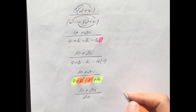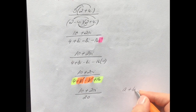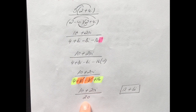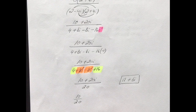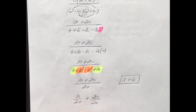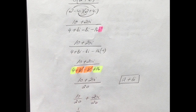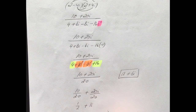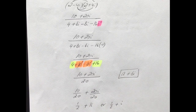Now be careful — you need the answer in the form a plus bi. Divide both terms 10 and 20i by 20: 10 divided by 20 is one half, and 20i divided by 20 is just i. So the answer is one half plus i.